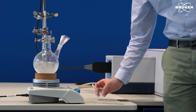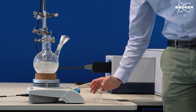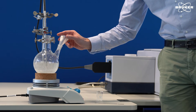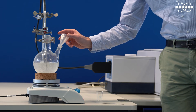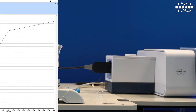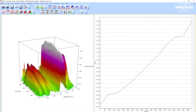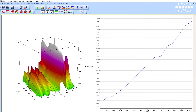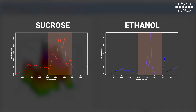The reaction has started now and all further steps are controlled through our software OPUS. After some time, we can observe the change in IR bands between 1200 and 900 wavenumbers. These bands indicate the reaction progress and that the yeast has begun to convert the sucrose into alcohol.